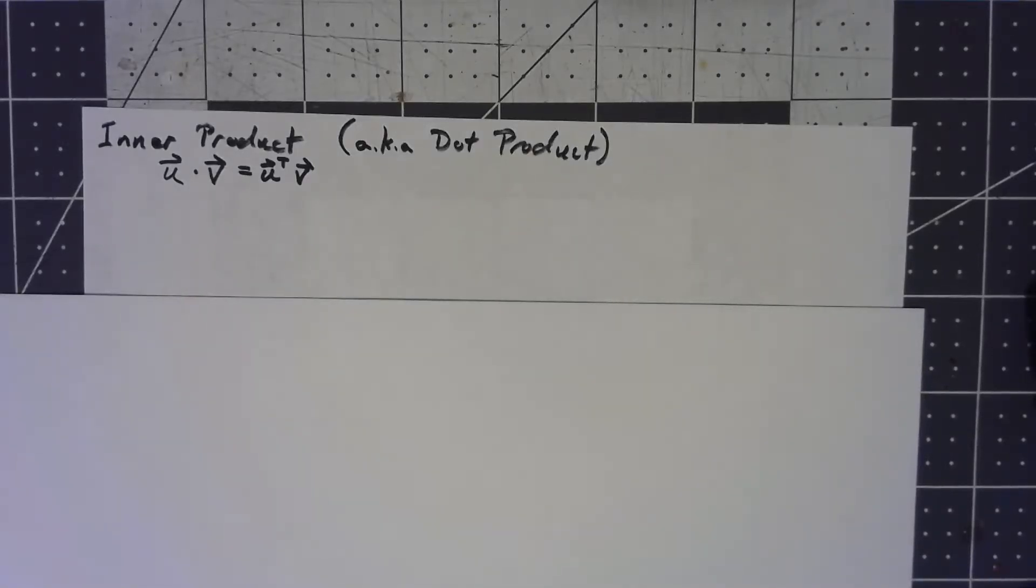The next big topic we want to talk about is called an inner product, although it's also referred to as a dot product. In fact, I'll quite often just refer to it as a dot product, mainly because it's just slightly easier to say.